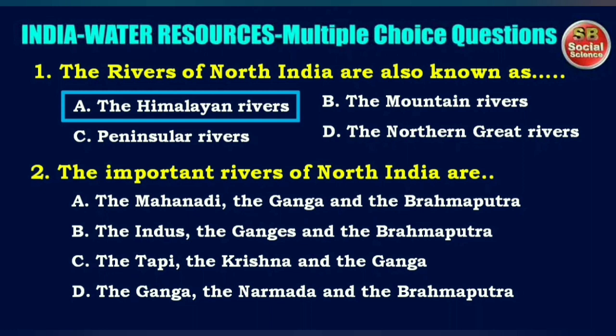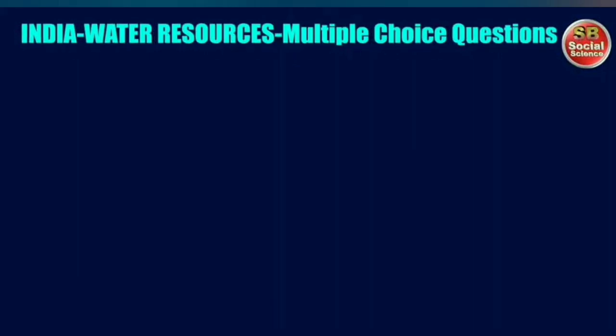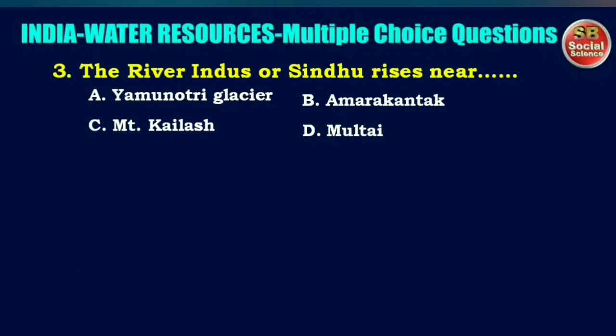Next question: the important rivers of North India are — options are the Mahanadi and Ganga, the Indus, Ganga and Brahmaputra, the Tapi, Krishna and Ganga, or the Ganga, Narmada and Brahmaputra. The right answer is option B: the Indus, the Ganga, and the Brahmaputra.